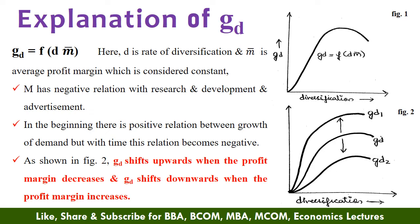And similarly, the profit increases if the spending on research and development or advertisement is less. As shown in the figure, there is a positive relation between the growth of demand and diversification. But with time, this relation becomes negative. On the other hand, if more is spent on advertisement and research, the growth rate of the product will increase. So, as shown in figure 2, the GD curve shifts upwards when the profit margin is decreasing and GD shifts downward when the profit margin increases.